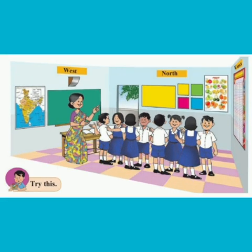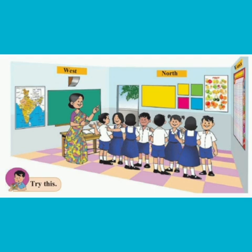Now, let's try this. Stand again in two rows in the classroom facing each other. Write the names of the four main directions on the walls of the classroom with the help of the teacher. Now, tell each other the direction in which the blackboard, the main door of the classroom, and the teacher's table are located. You will come to know that your answers and the answers of your friend facing you are the same. For example, the blackboard will be to the north for you as well as for your friend facing you. It is easy to understand the location of an object with the help of directions.